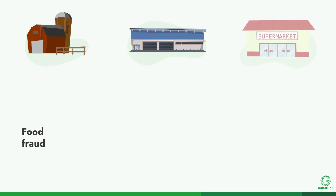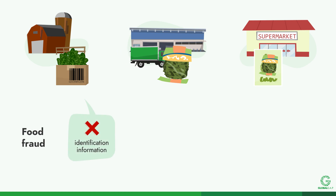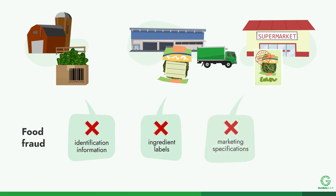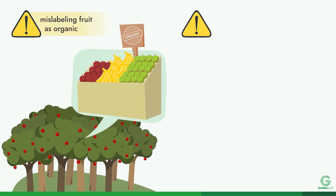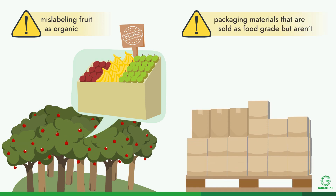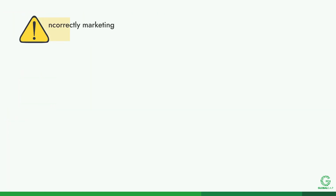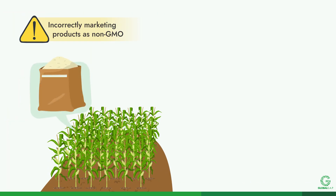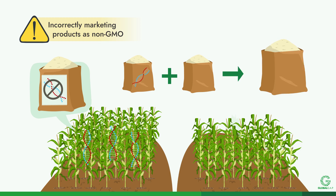Food fraud means that food entering the supply chain has incorrect identification information, ingredient labels, or marketing specifications for an economic gain. Some examples of food fraud include labeling fruit that was grown using conventional methods as organic, or receiving packaging materials that are sold as food grade but aren't. Another example is the marketing of products as not being GMOs when they are actually genetically modified, including products that are inappropriately mixed and sold under a specific claim.